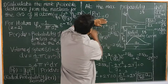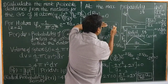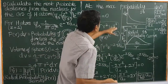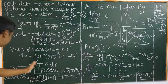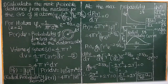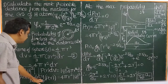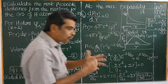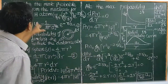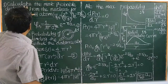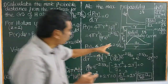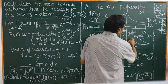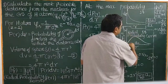This is the probability density function. If you multiply 4πr² then it is called a radial probability distribution function or radial probability density function. How is it derived? And the most probable distance — how far the electron is from the nucleus for the 1s orbital.